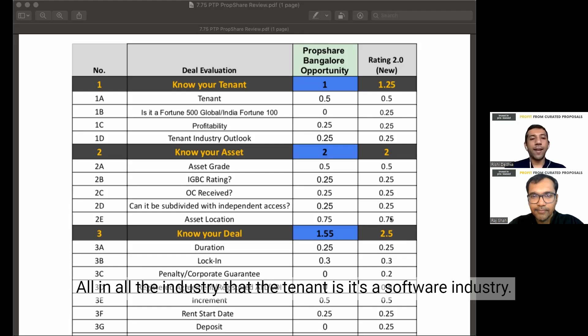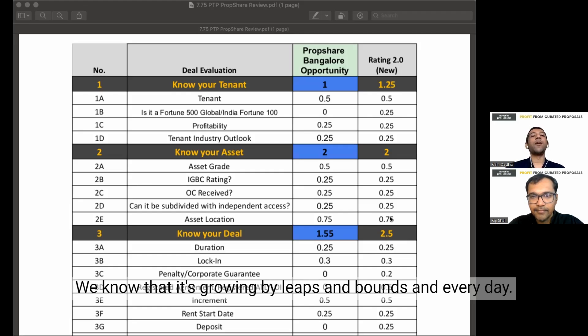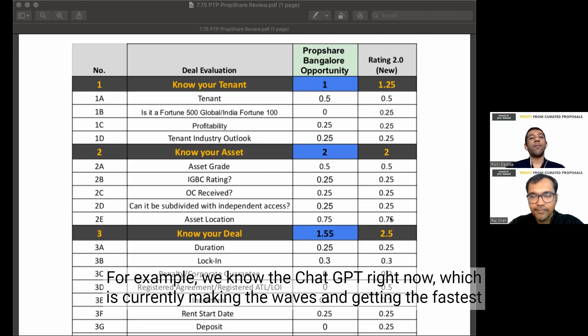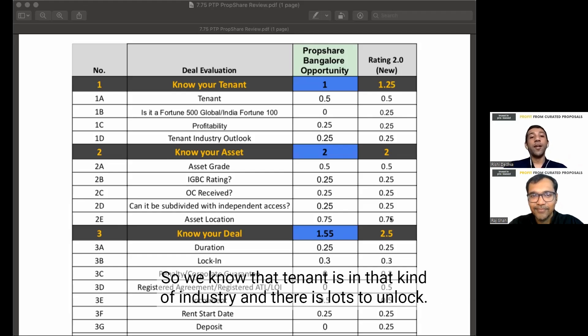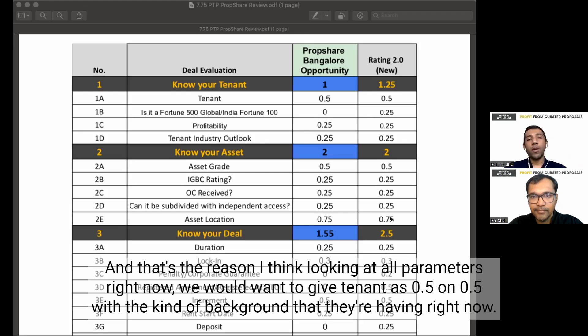The good part is you have Sequoia Capital being one of the early investors way back in 2003. You know that the tenant is a two-decade-old company in operations right now. The industry that the tenant is in, it's a software industry. We know that it's growing by leaps and bounds.